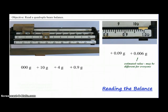Remember that this is an estimated value. It's going to be different for different people, so if you thought it was going to be a 4, whereas your partner next to you thought it was going to be a 7, that's okay, you just need to agree upon a number as what it's going to be for your data. When we put all these numbers together, we have 0 grams plus 10 grams plus 4 grams plus 0.9 grams plus 0.09 grams plus 0.006 grams, we come up with a reading of 14.996 grams.